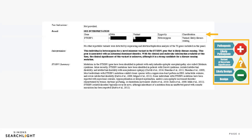Some variants are classified as a VUS. This stands for variants of uncertain significance or inconclusive results. This means that a change was found, but scientists don't have enough information yet to say one way or another if this change is the cause of the condition. Scientists keep learning more about genetics and hope to better determine in the future how these changes may or may not affect the body. Changes labeled benign or likely benign often aren't reported, because it is unlikely to be the cause of your or your child's condition.